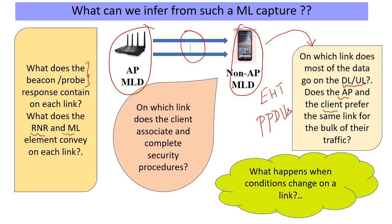We can ask: do the AP and the client prefer the same links for sending their respective data, or do they prefer different links? What link does association and other security procedures happen on — does it happen on more than one link? We could also create conditions where we change the link properties and see whether intelligent link adaptation — using different links depending on the conditions of other links — is built in. These are the new things we are likely to encounter when examining how efficiently MLO is working in practice, and whether that has been tuned well in a particular product to yield performance benefits.